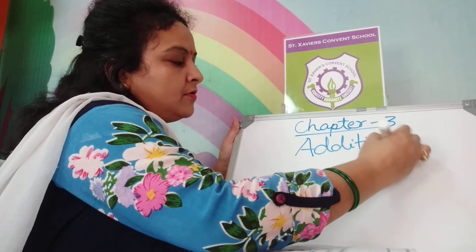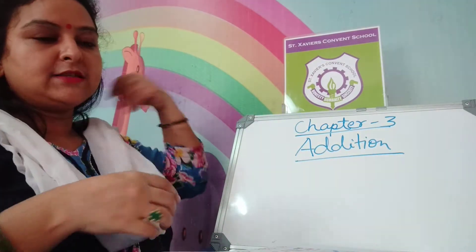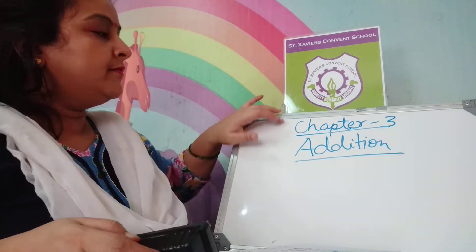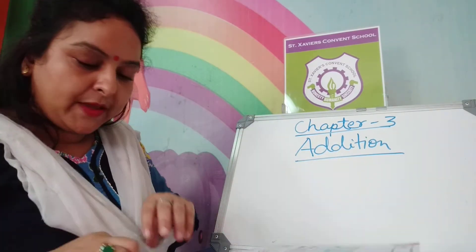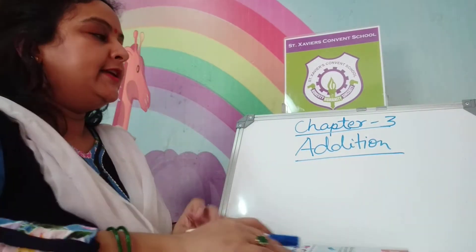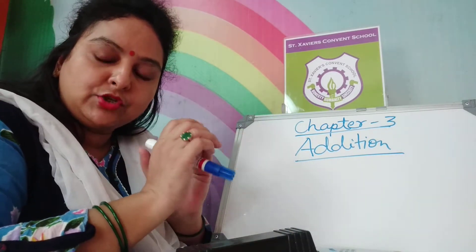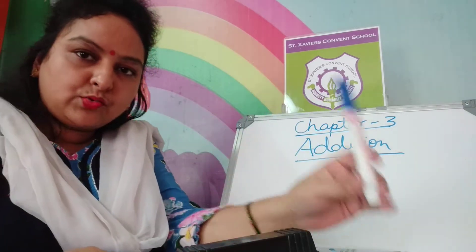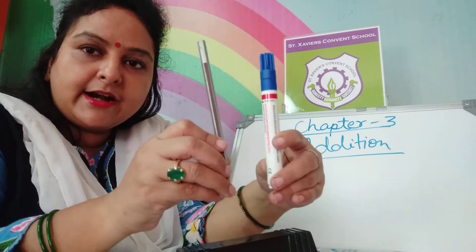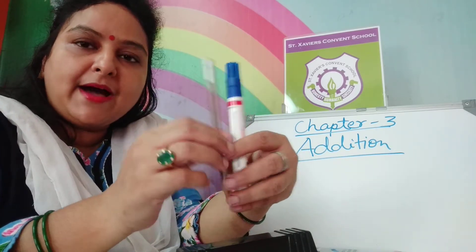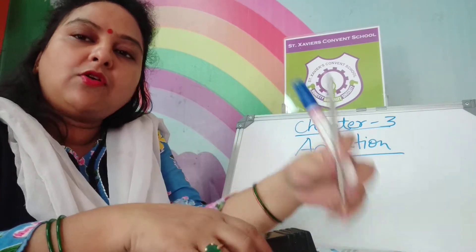All of you know very well how to add any number. You learned it in class prep. Now in class one, you will also read addition. What is addition? This chapter is on page number 38. Addition means combining together. Suppose this is one pen and this is one pencil. We combine these — how many objects are here? Here are two objects. When we combine any two or three numbers, the answer will be called sum.